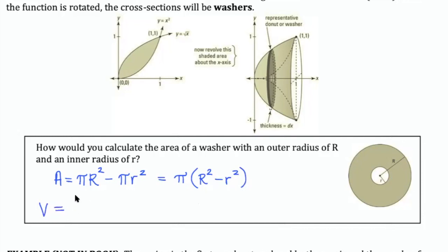So now if we want to calculate volume, if this is what our area function looks like, we're going to be integrating pi times capital R squared minus lowercase r squared. And we'll either do that dx or dy, depending on the orientation of the axis of revolution.